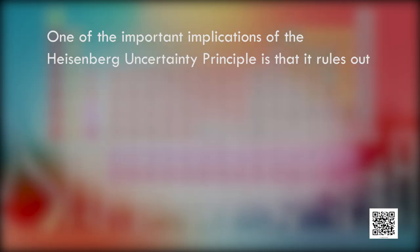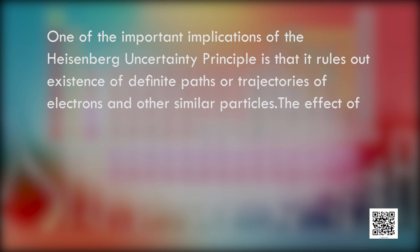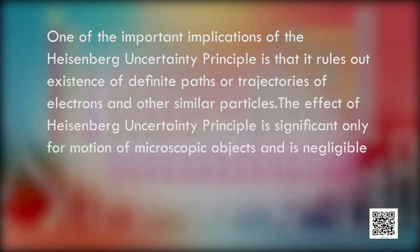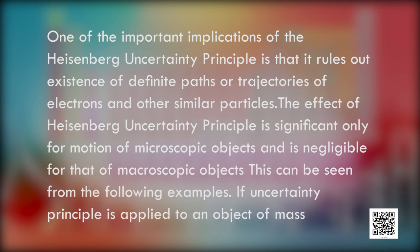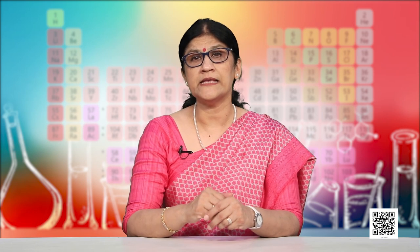One of the important implications of the Heisenberg uncertainty principle is that it rules out the existence of definite paths or trajectories of electrons and other similar particles. The effect of the Heisenberg uncertainty principle is significant only for the motion of microscopic objects and is negligible for macroscopic objects. Only if both the position and the velocity of an electron are known exactly at the same time would a definite trajectory exist — but this is not possible according to the Heisenberg uncertainty principle. Bohr's model therefore not only ignores the dual behavior of matter but also contradicts Heisenberg's uncertainty principle.